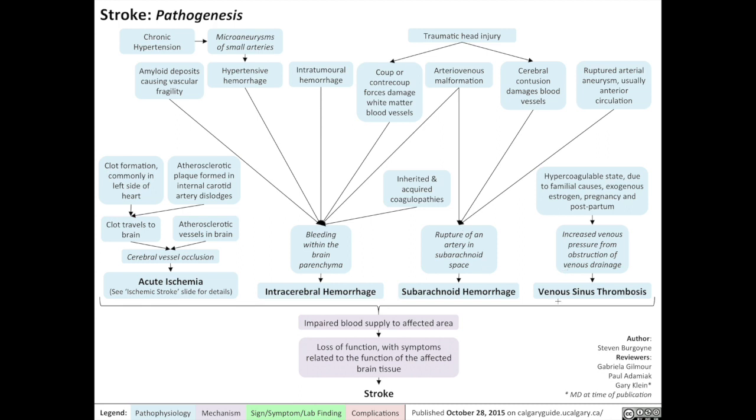Finally, the fourth type of stroke, venous sinus thrombosis, is usually caused by a hypercoagulable state, either due to hereditary or familial causes, exogenous estrogen such as birth control pills, pregnancy, and postpartum situations. These situations result in a hypercoagulable state, one of the three prongs of Virchow's triad, which leads to thrombosis occurring in the large venous sinuses of the brain, which then go on to obstruct venous drainage and cause the signs and symptoms that they do.